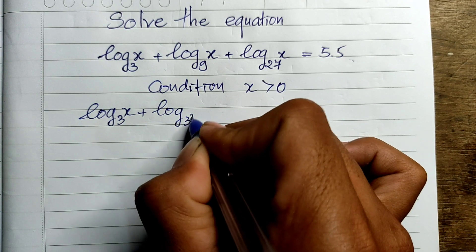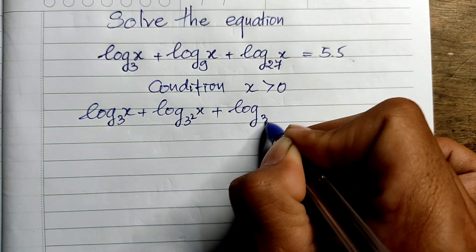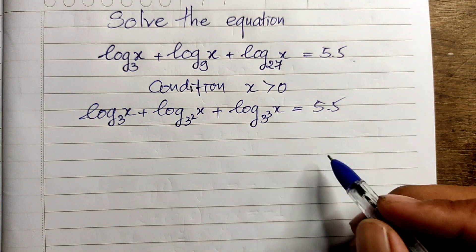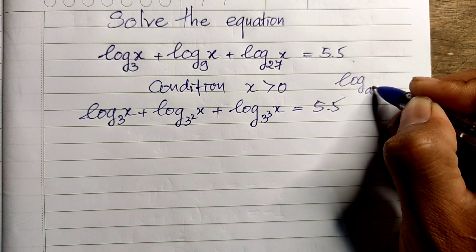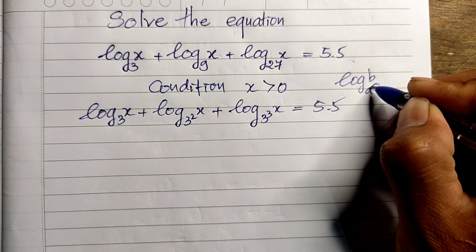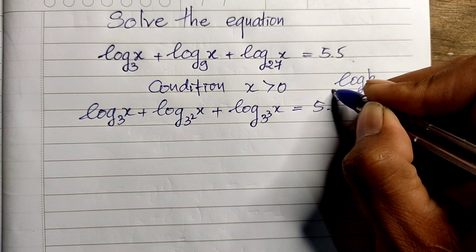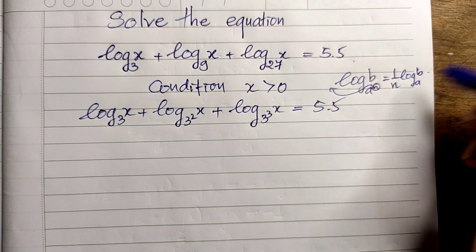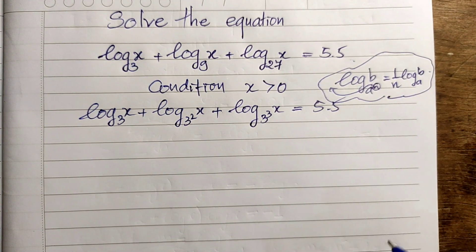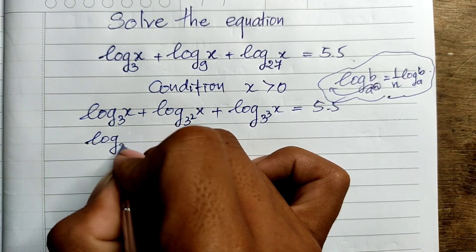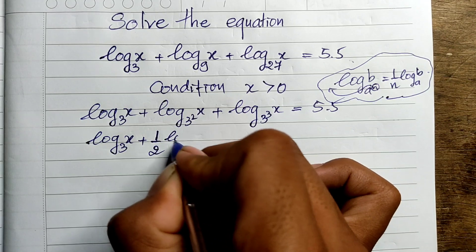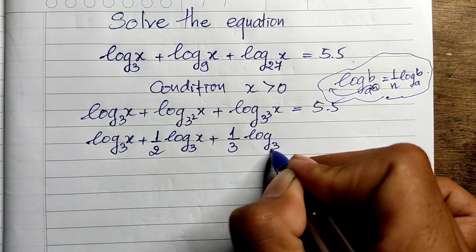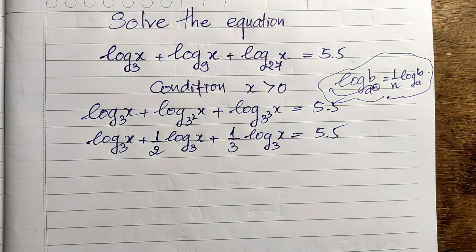Now we can rewrite: log base 3 of x, plus log base 3-squared of x, plus log base 3-cubed of x, equals 5.5. Applying the change of base rule, this becomes log base 3 of x, plus one-half log base 3 of x, plus one-third log base 3 of x.